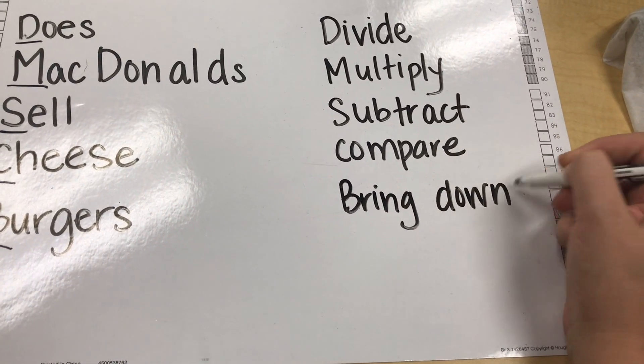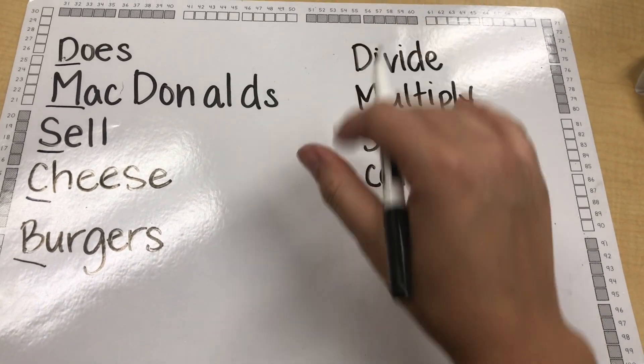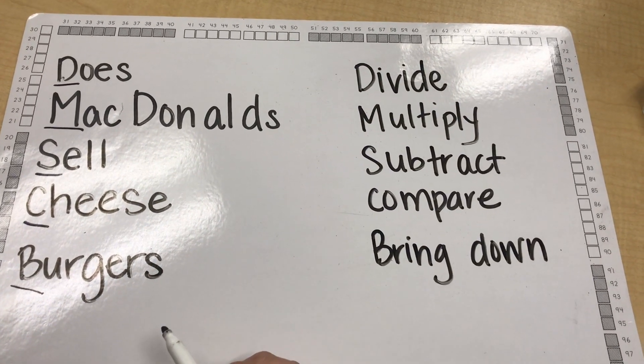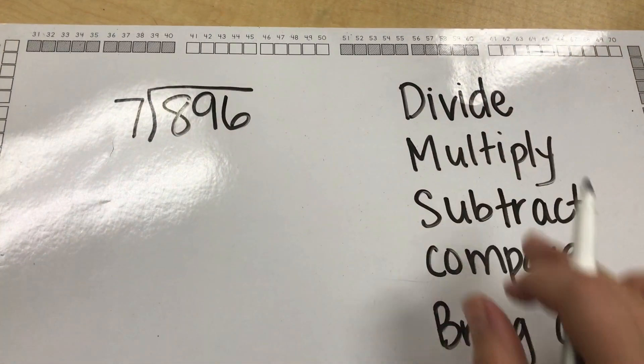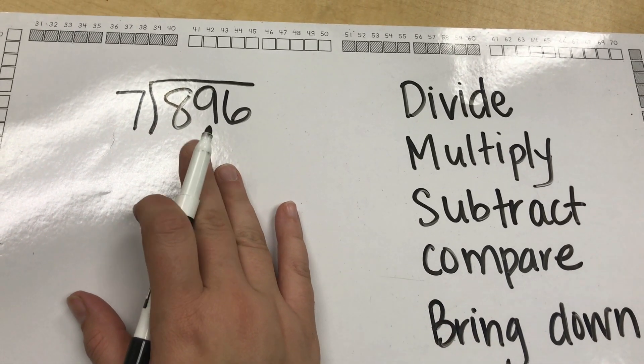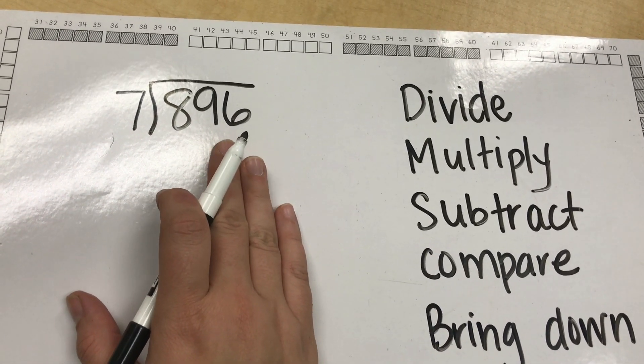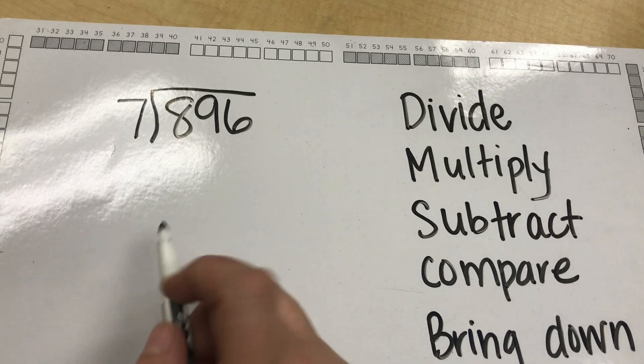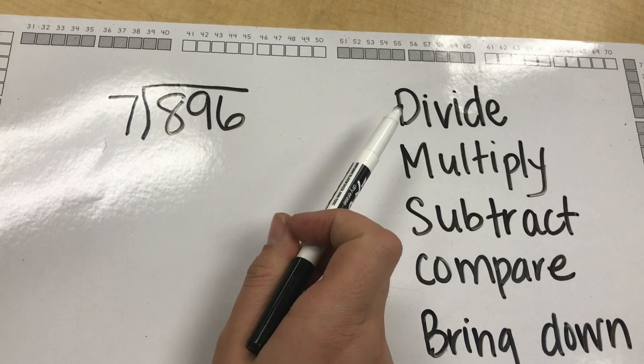And now I will show you a division problem using these steps and how it will help our students better understand division. Using my steps for division here I am going to solve this problem, 896 divided by 7. Going to my greatest place value I will start with divide.